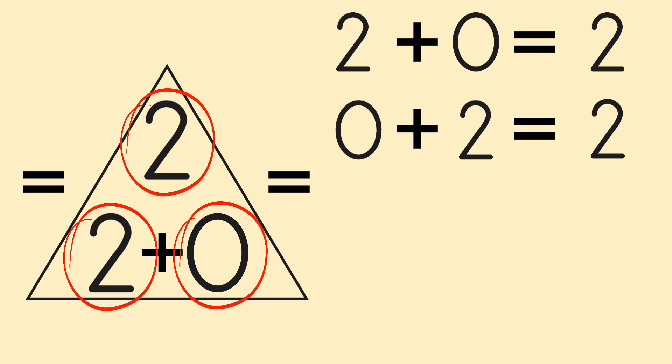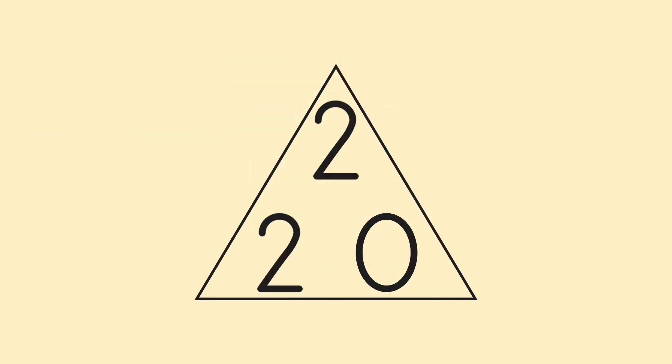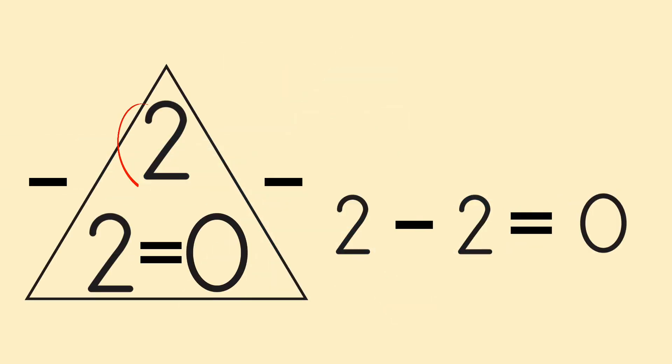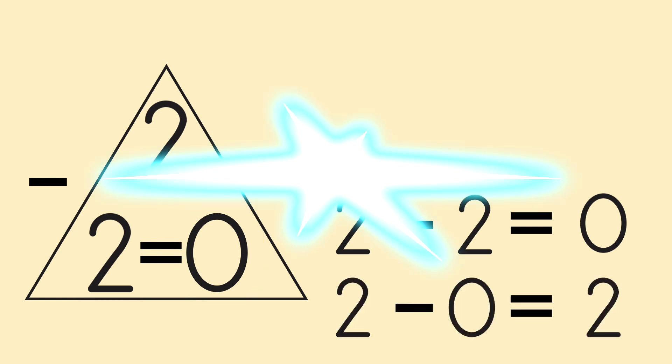Next, she tried subtraction. Start at the top, go down and over. 2 minus 2 equals 0. And go down the other way. 2 minus 0 equals 2.